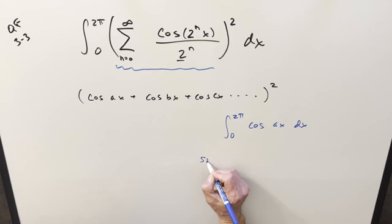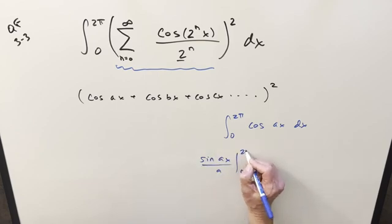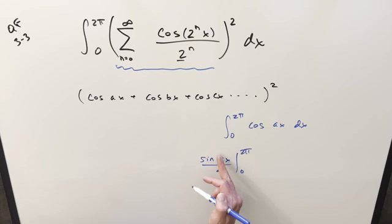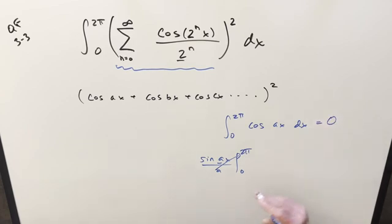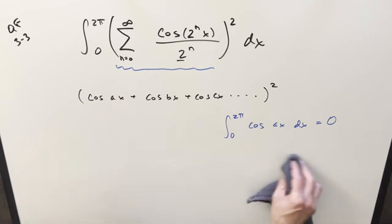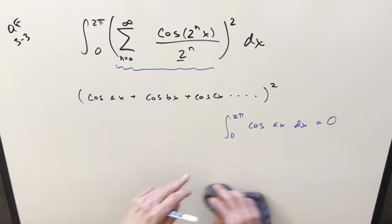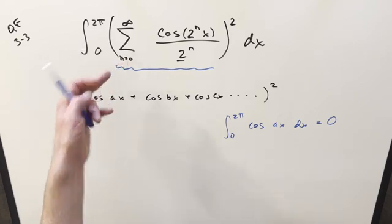Well, I can just integrate this and we get sine ax over a evaluated from 0 to 2π, but sine at 0 is 0. Sine at an integer multiple of 2π is 0, so the whole thing's going to be 0. So that's promising because we would definitely like to get rid of some terms. If we can zero some of this out, then maybe we have something simpler to work with.